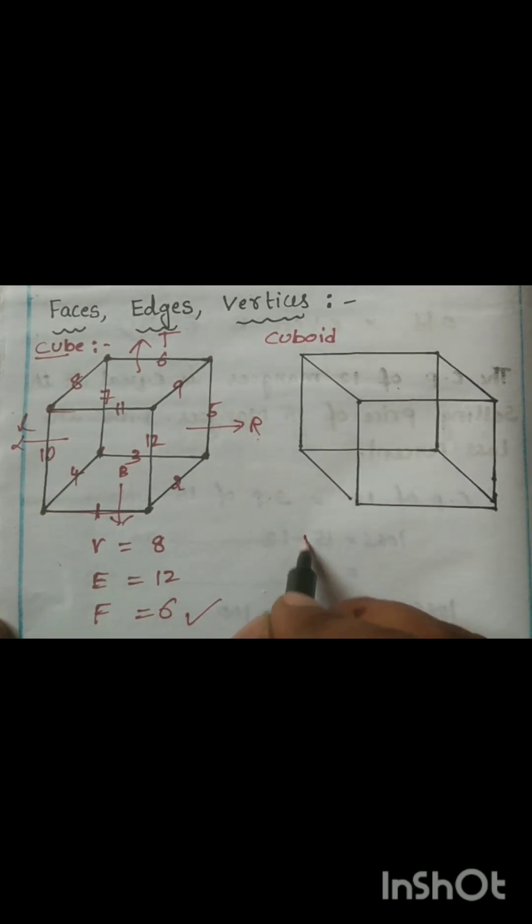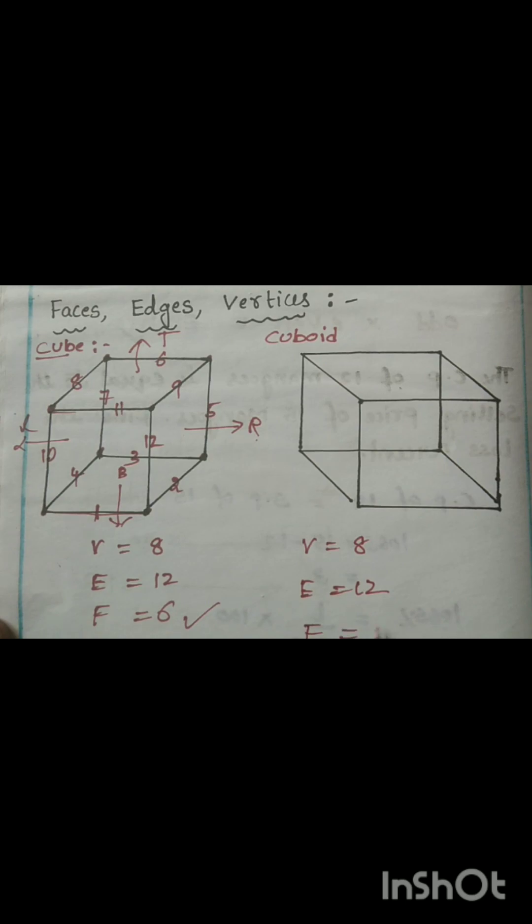Both cube and cuboid having same number of edges. Vertices are 8, edges 12, and faces are 6.